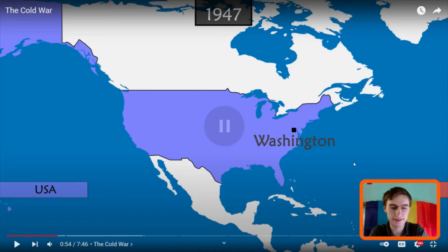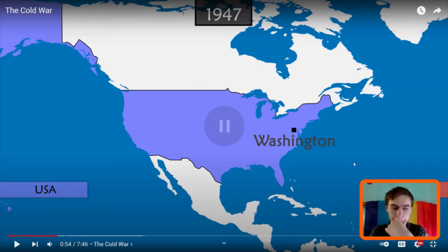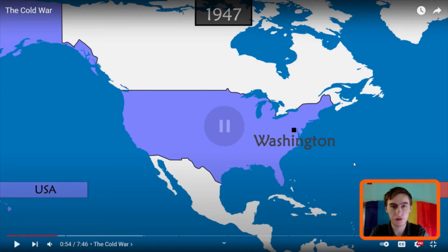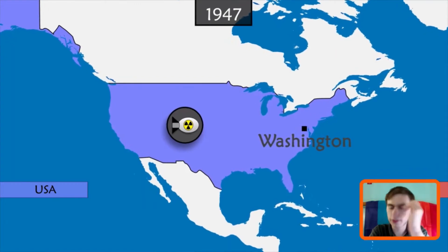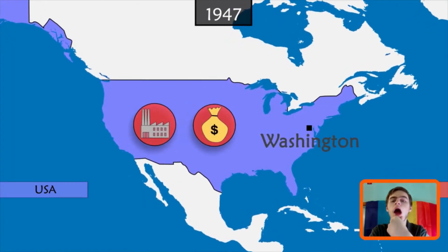Yeah, that's it — the United States is a capitalist country. So in the wars they would support the capitalist side. For example, in the Korean War it would be the USSR supporting the North while the South would be supported by the United States. The US, being the only power with nuclear weapons, also boasts the world's strongest industry and economy.